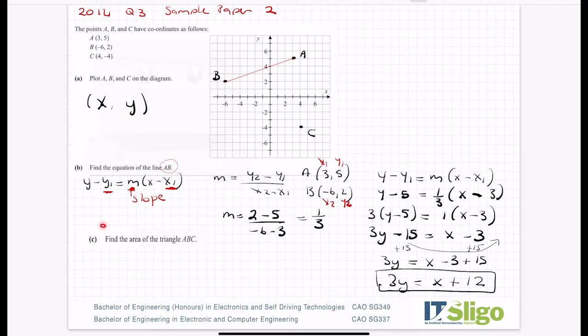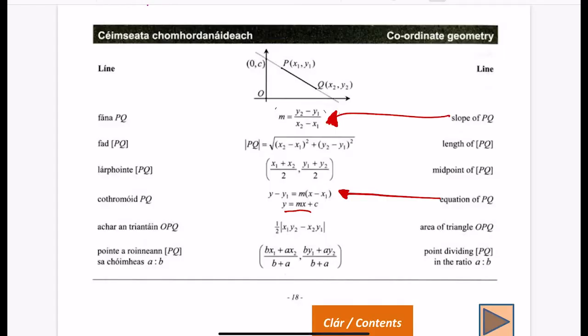The equation of a line links all these points together on this line and all the ones that go on either side of that because the line goes on forever. Okay, find the area of the triangle ABC. Well let's form a triangle first so we can see it.